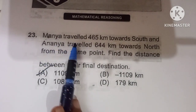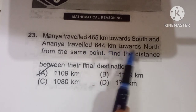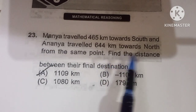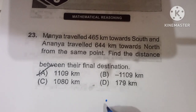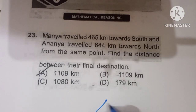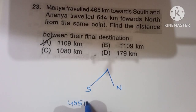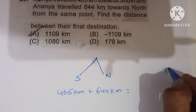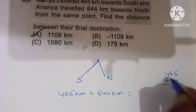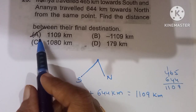Twenty-third question: Mania traveled 465 km towards south and Ananya traveled 644 km towards north from the same point. To find the distance between their final destinations: 465 plus 644 equals 1109 km. Option A is the correct one.